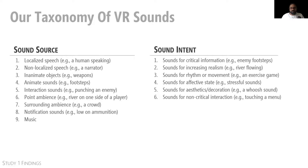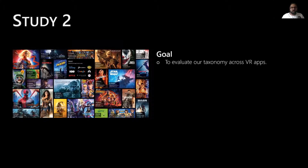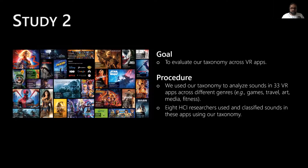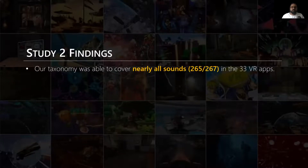Now that we have a taxonomy, we needed to evaluate how good it is — whether it can really accurately represent VR sound. So we conducted a second study with the goal of evaluating the taxonomy across VR apps. We did this by using the taxonomy to analyze sounds in 33 VR apps across a variety of categories such as games, fitness, arts, etc. We recruited 8 researchers who used and classified sounds in these VR apps using the taxonomy. The primary finding was that the taxonomy was able to cover nearly all sounds encountered in the apps.